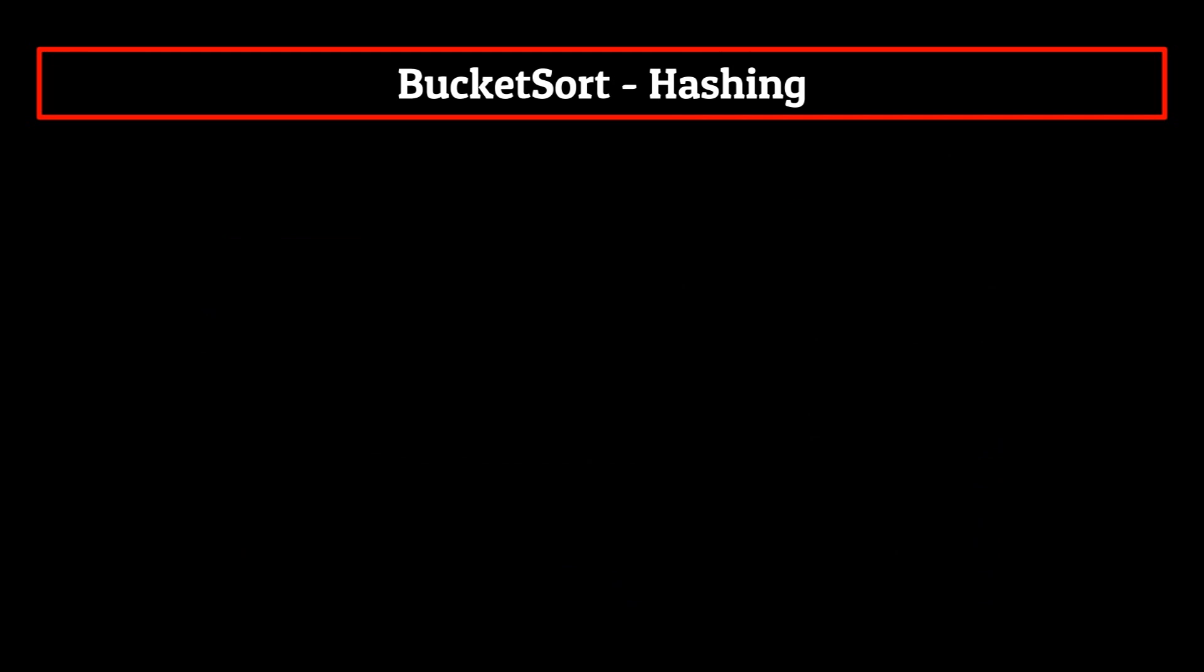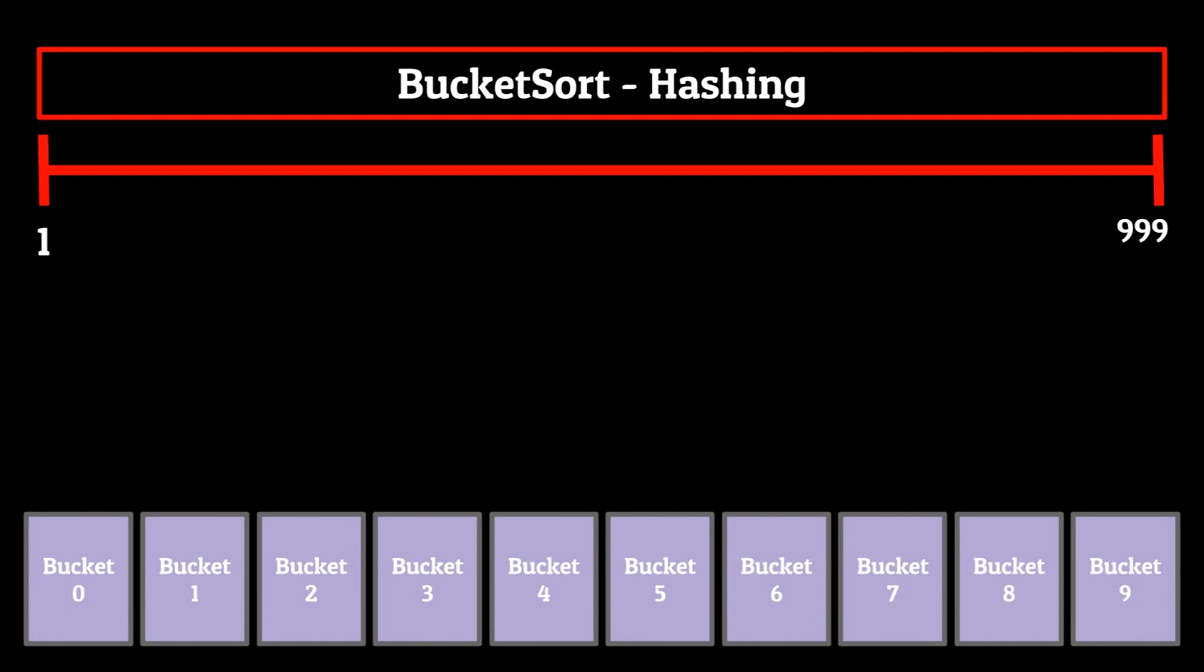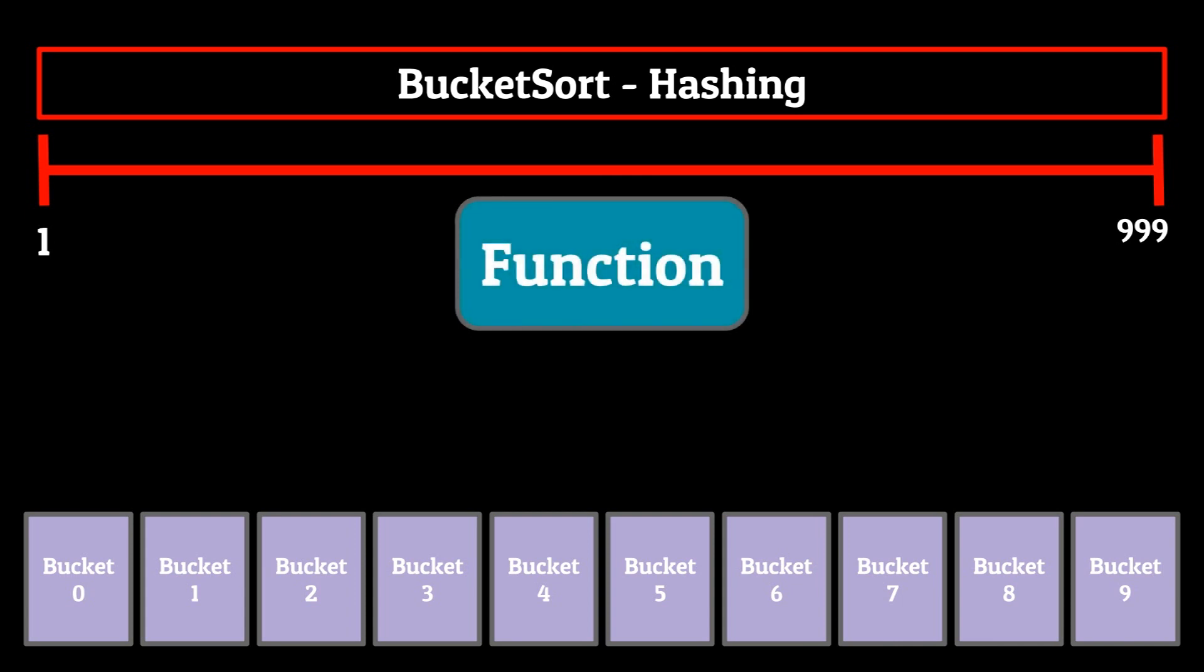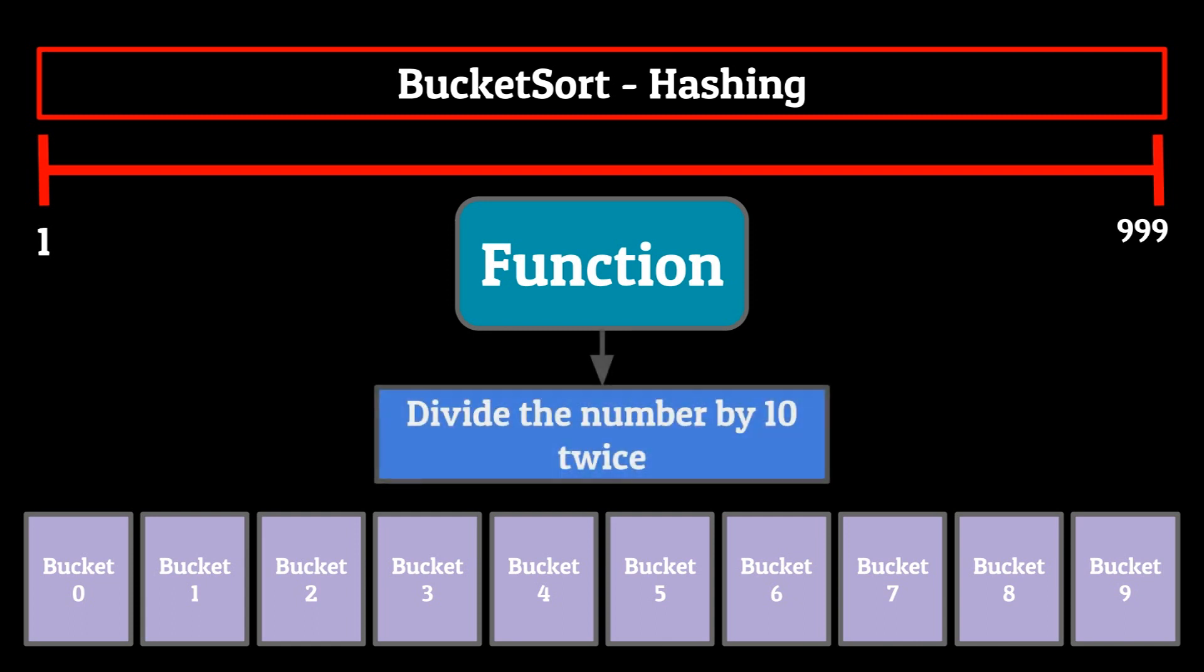To help you guys better understand this, let's go through an example. Imagine that there's a data set where elements are evenly dispersed, one integer apart from zero to 999. A good number of buckets for this data set could be 10. What might be a good hash function here?